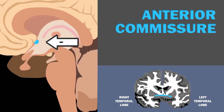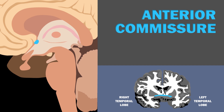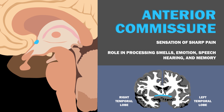There is also the anterior commissure. The anterior commissure connects the two temporal lobes. It is important in the sensation of sharp pain, and plays a role in processing smells, emotion, speech, hearing, and memory.